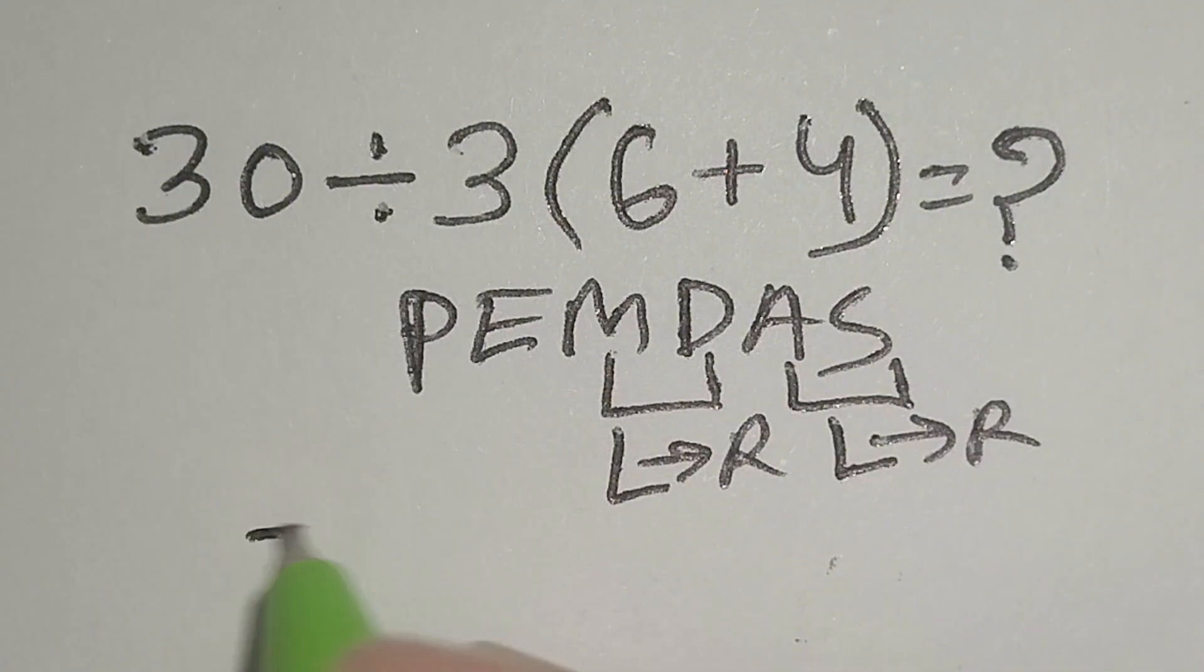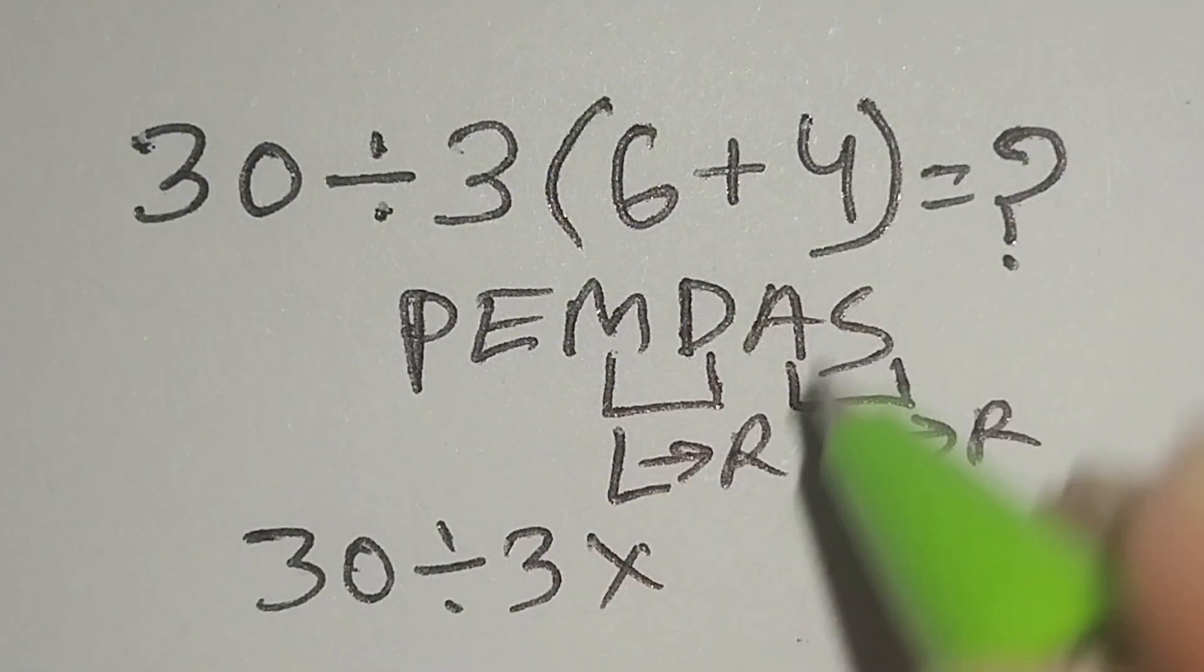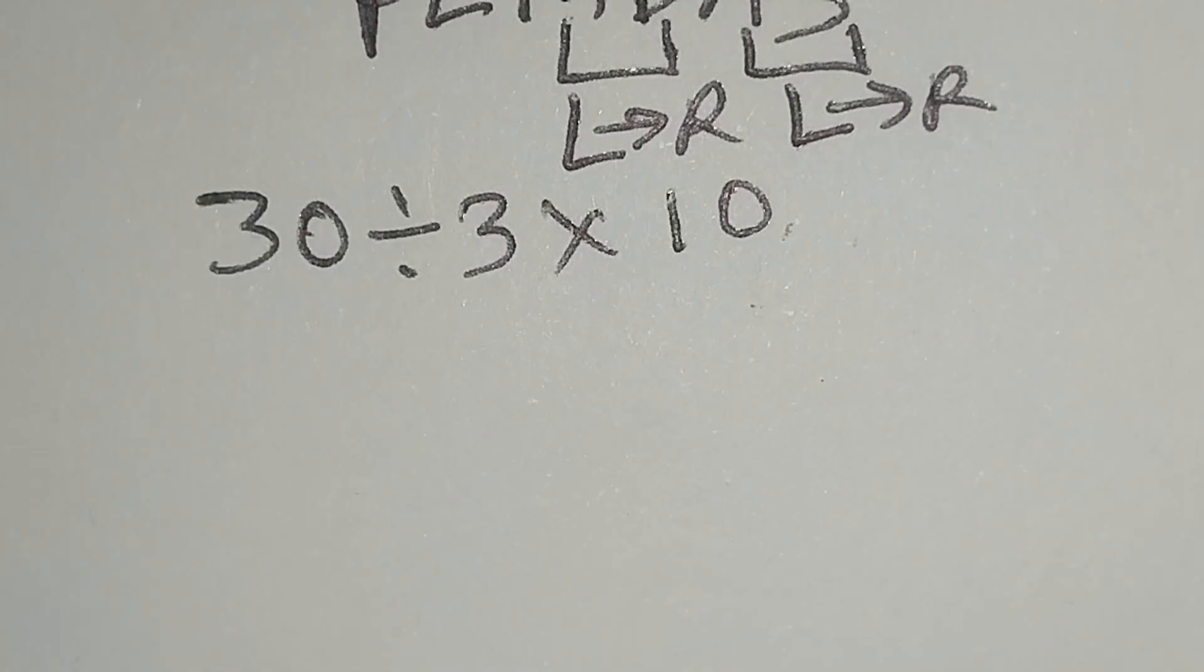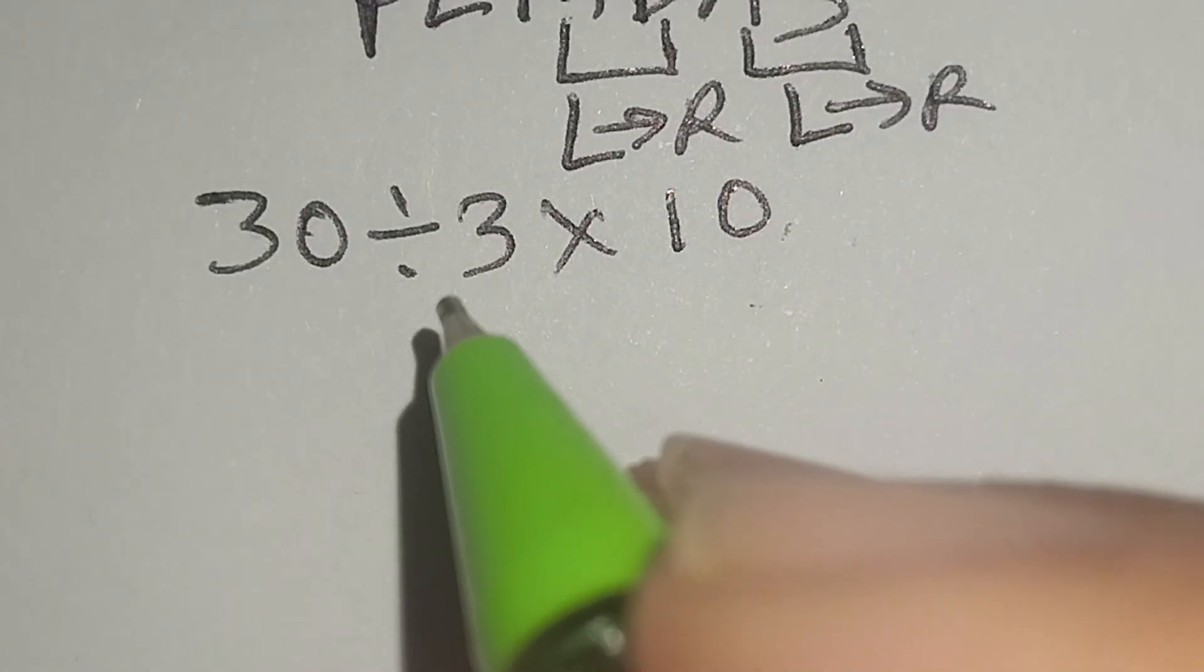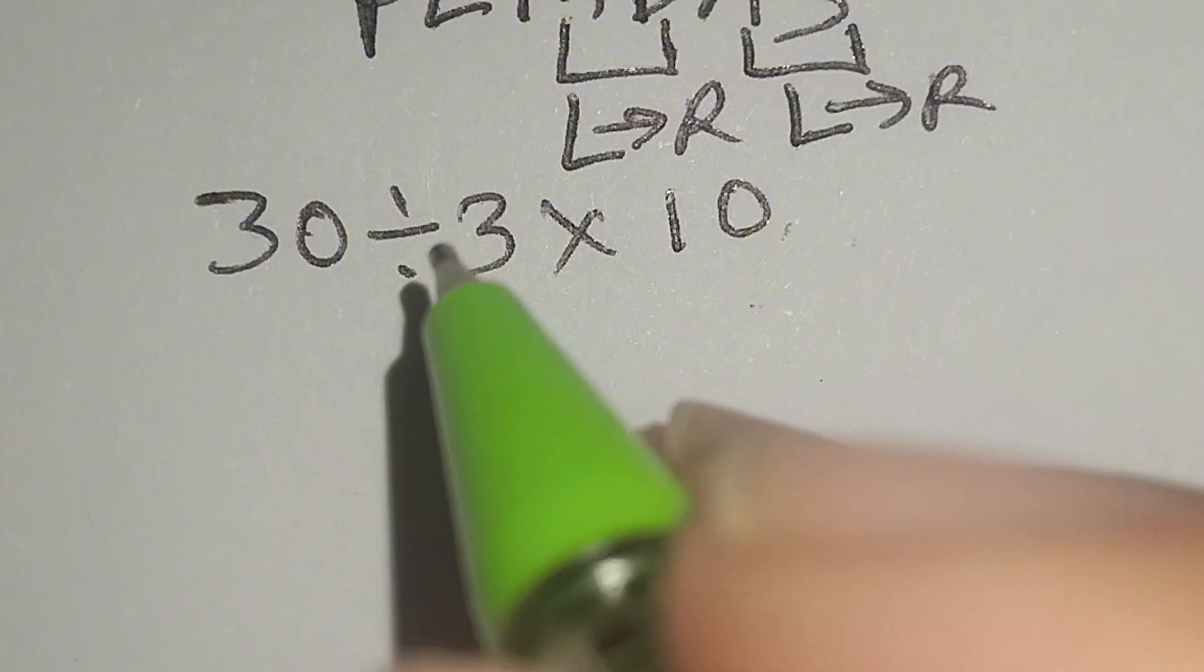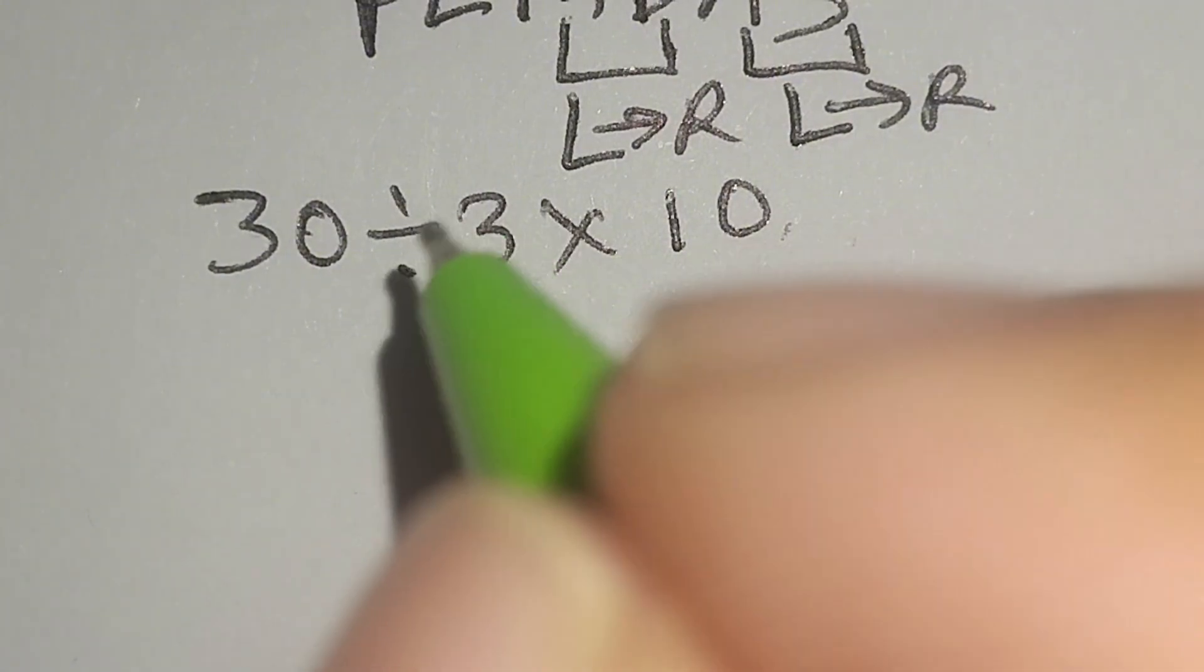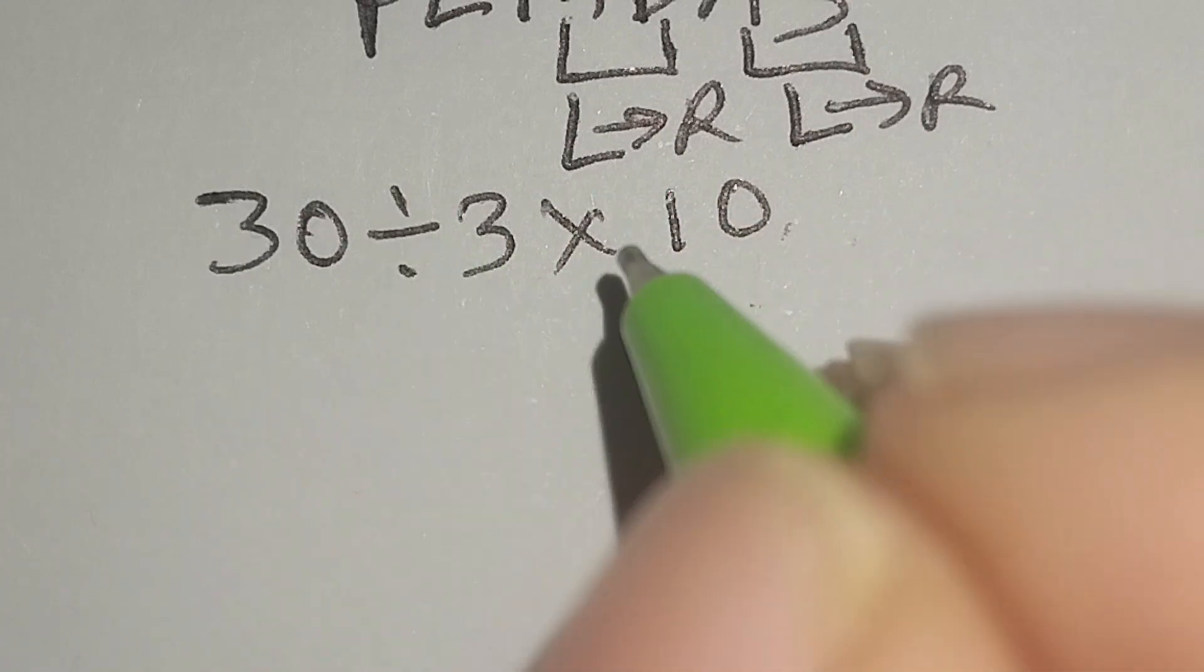Here, 30 divided by 3 multiplied by 6 plus 4 gives us 10. Now I have to work with division because multiplication and division have the same priority, so we work left to right. Therefore, first we work with this division, then this multiplication.